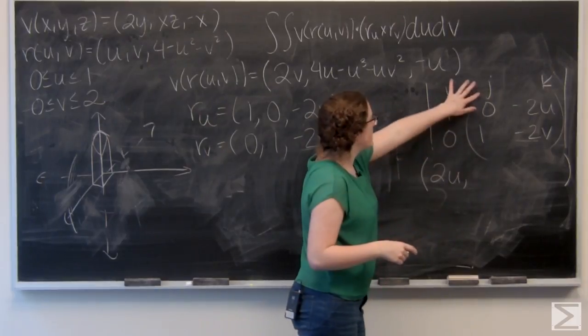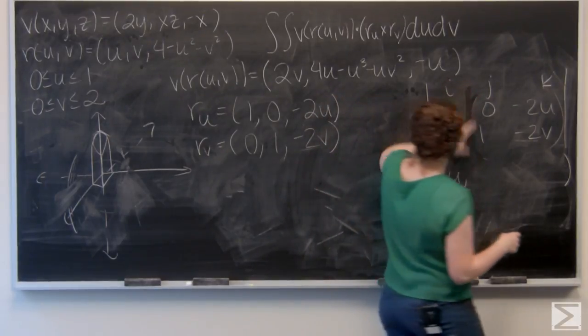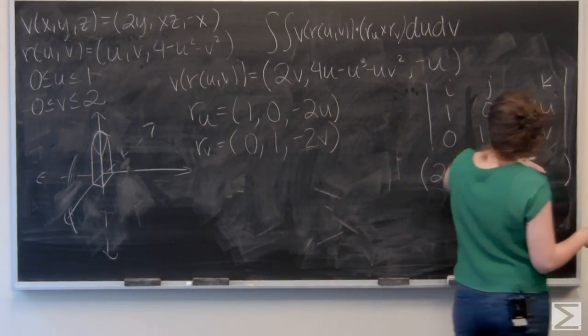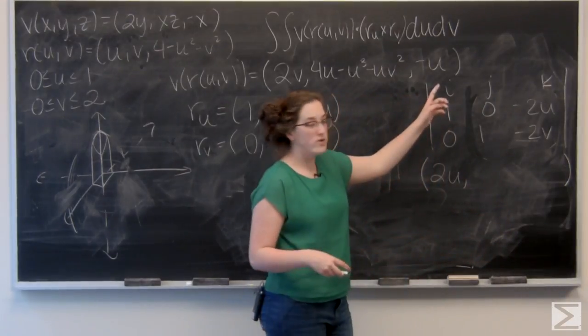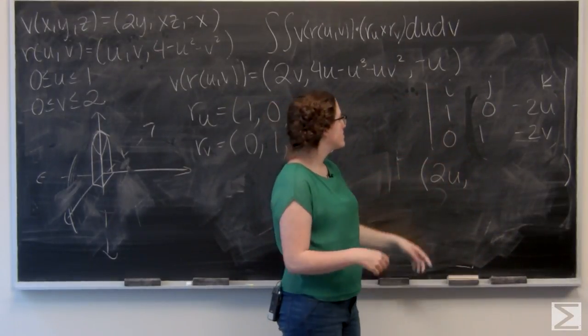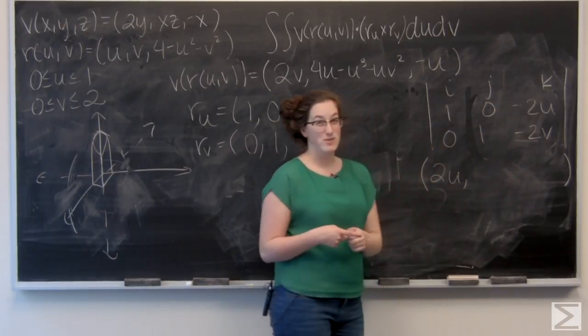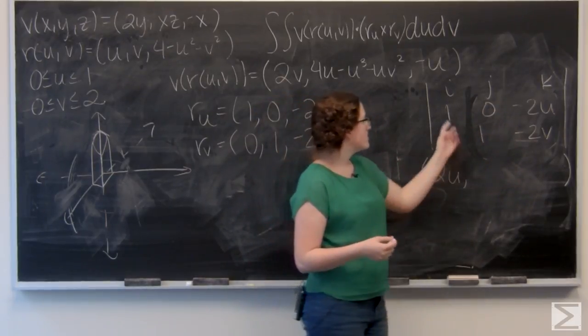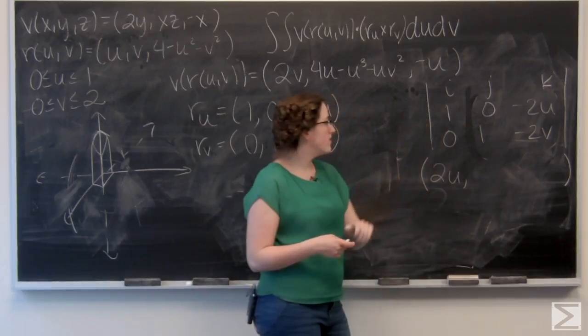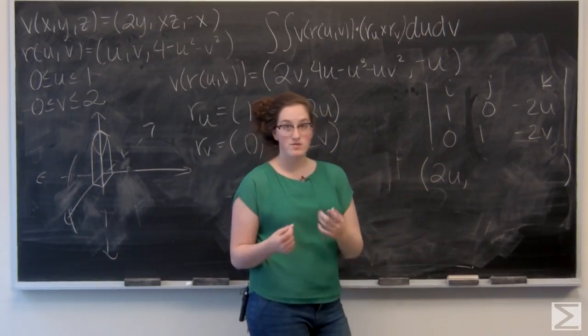And then for j, I'm going to still cut the top row, but now instead cut the middle column. So, I have a 2 by 2 matrix, 1, negative 2u, 0, negative 2v, and that's what I'm going to take the determinant of. So, I have negative 2v minus 0, and then alternating signs, so that becomes 2v.